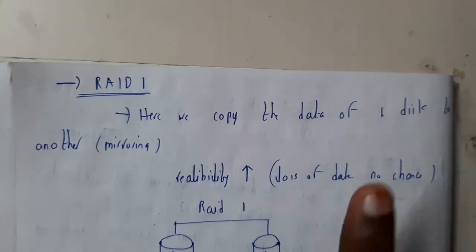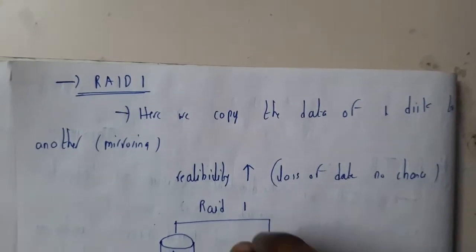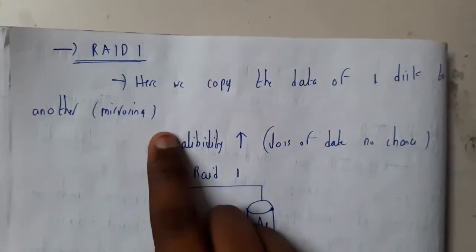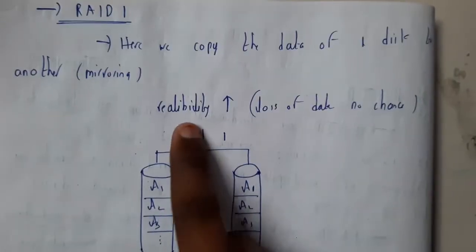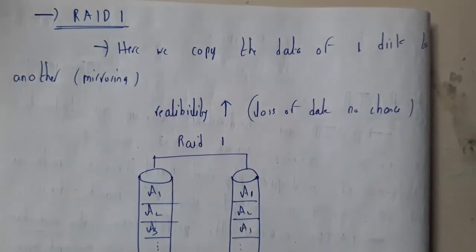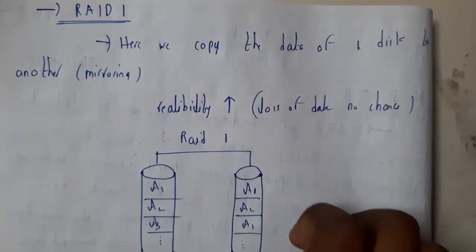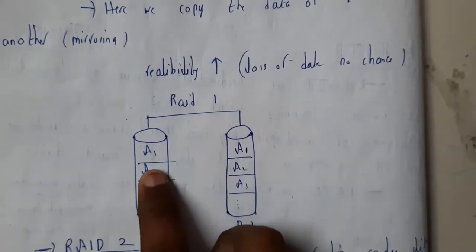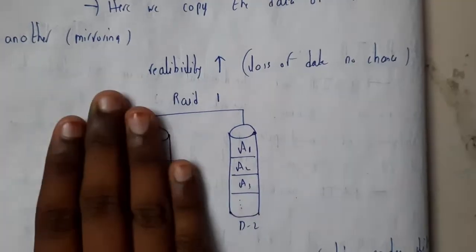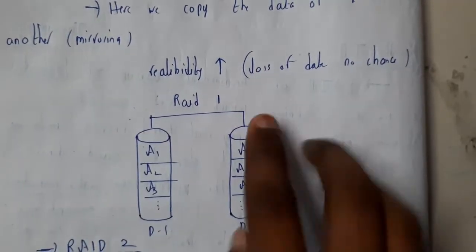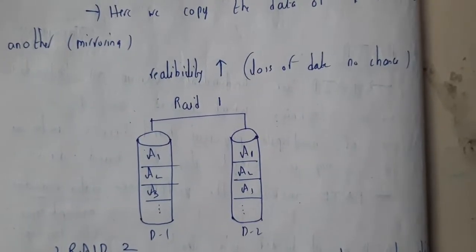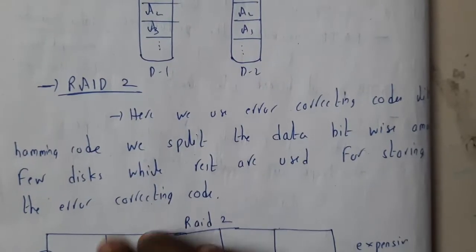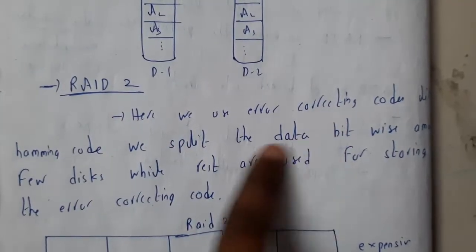In RAID 1, we copy the data of the first disk to another disk. This increases reliability — meaning it reduces the loss of data. RAID 1 stores a1, a2, a3 on one disk and the same a1, a2, a3 on another disk. If one disk fails or collapses due to some issue, we can retrieve the data from the other disk.